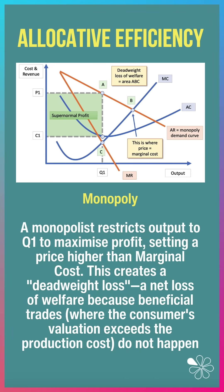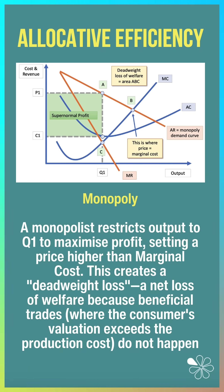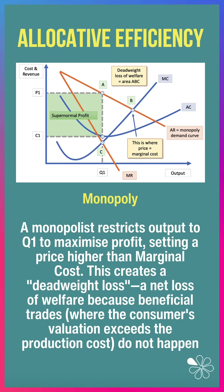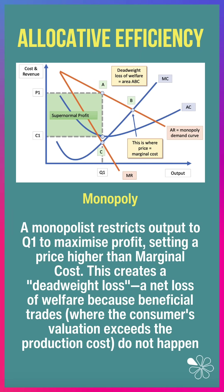Whereas with Monopoly, they tend to restrict output to Q1 to maximise profit, setting a price well above marginal cost. This leads to a deadweight welfare loss equal to Area A, B, C — a net loss of welfare because beneficial trades, where people's valuation exceeds the production cost, simply don't happen. Output is lower than the competitive equilibrium.